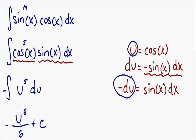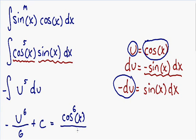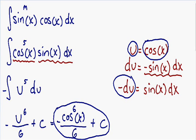We've integrated, but our answer is in terms of u, and the final answer always needs to be in terms of x. Since u equals cosine of x, we replace u to the 6th with cosine of x to the 6th. So our final answer is negative cosine of x to the 6th over 6 plus C. That's how you integrate a trig integral using u-substitution.